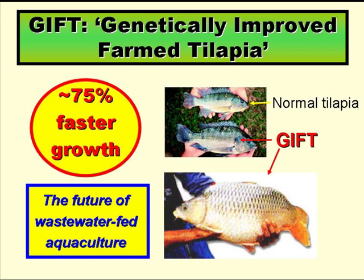GIFT stands for genetically improved farmed tilapia, and the GIFT strain of tilapia, which was developed by very careful selective breeding of wild and farmed strains, grows about 75% faster than non-GIFT strains. So it really has to be the future of wastewater-fed aquaculture, although, somewhat curiously, very little work has yet been done on growing the GIFT strain in wastewater-fed fish ponds.